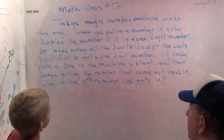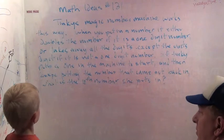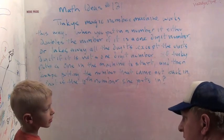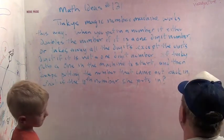Tinky's magic number machine works this way. When you put in a number, it either doubles the number if it is a one-digit number. Do you know what a one-digit number is? It's like six or four, nine. Yeah, very good.